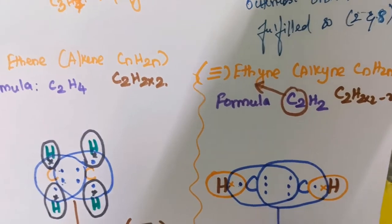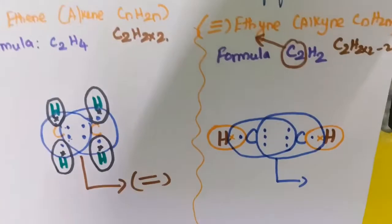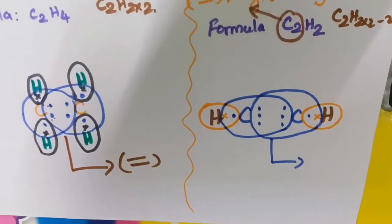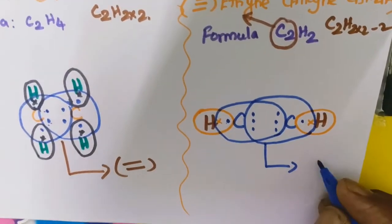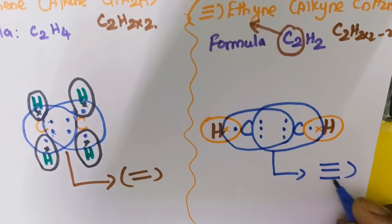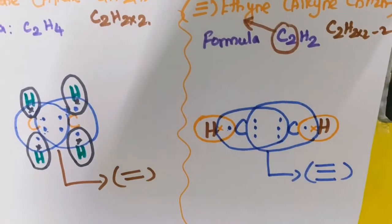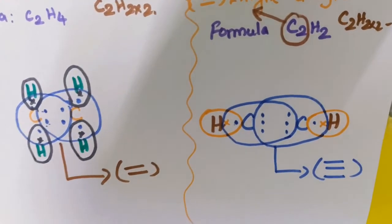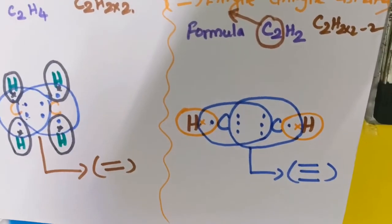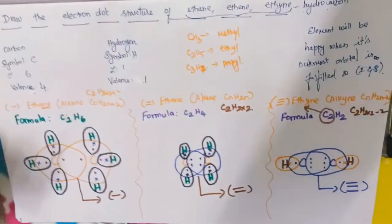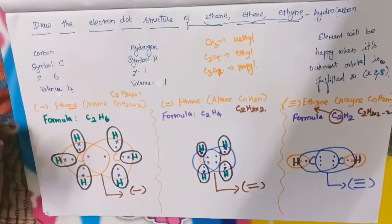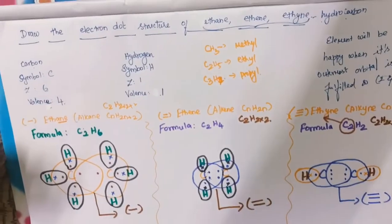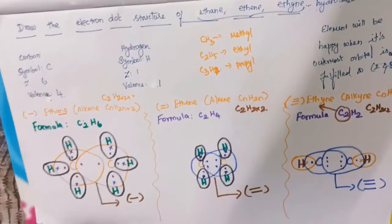3 electrons are shared, so it will form a triple bond. The alkyne family forms a triple bond. Thank you students. If you have any doubts, put them in the comments. All the best.